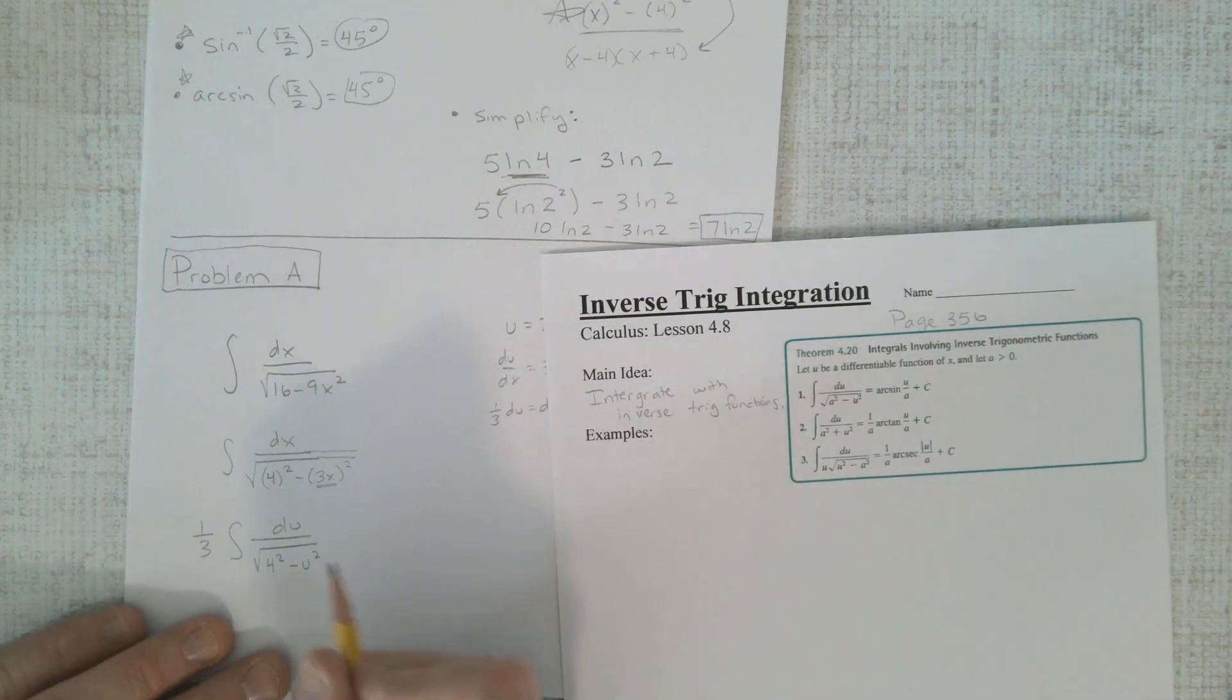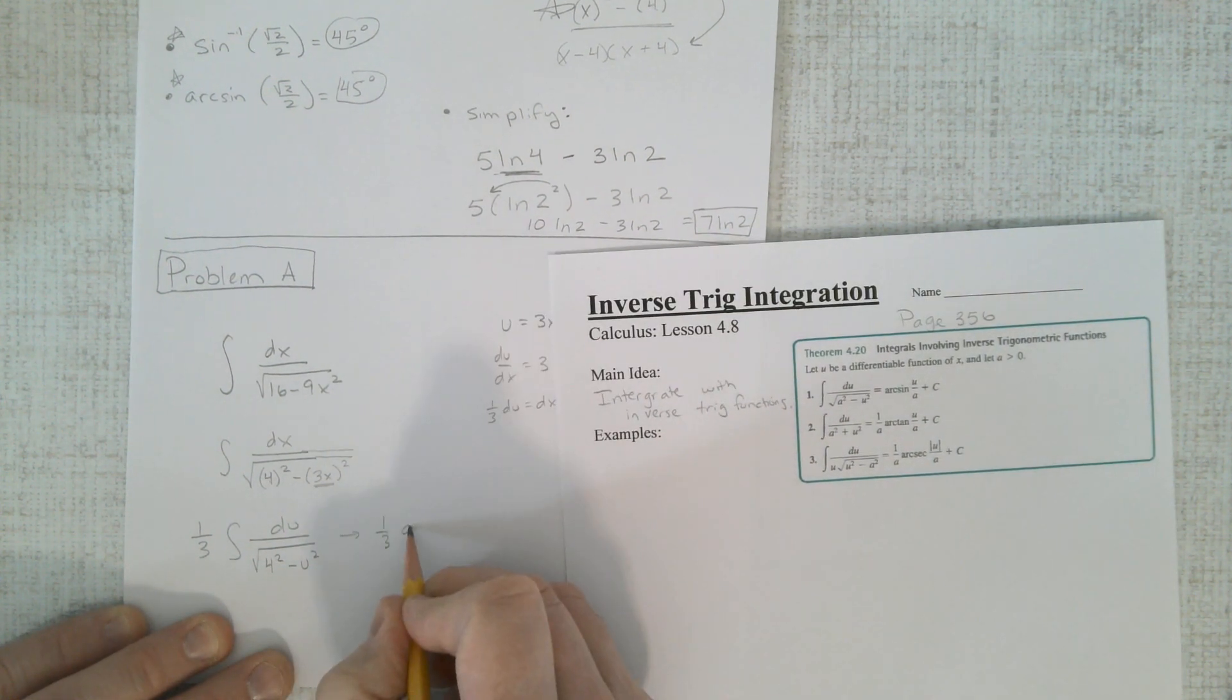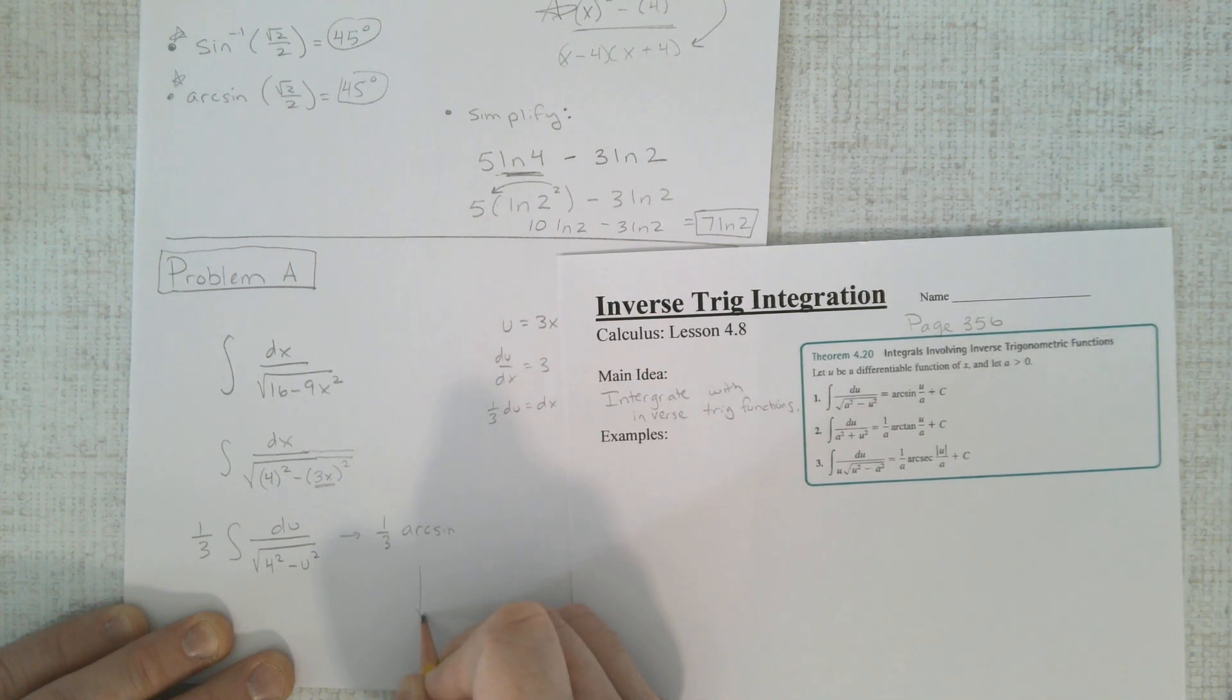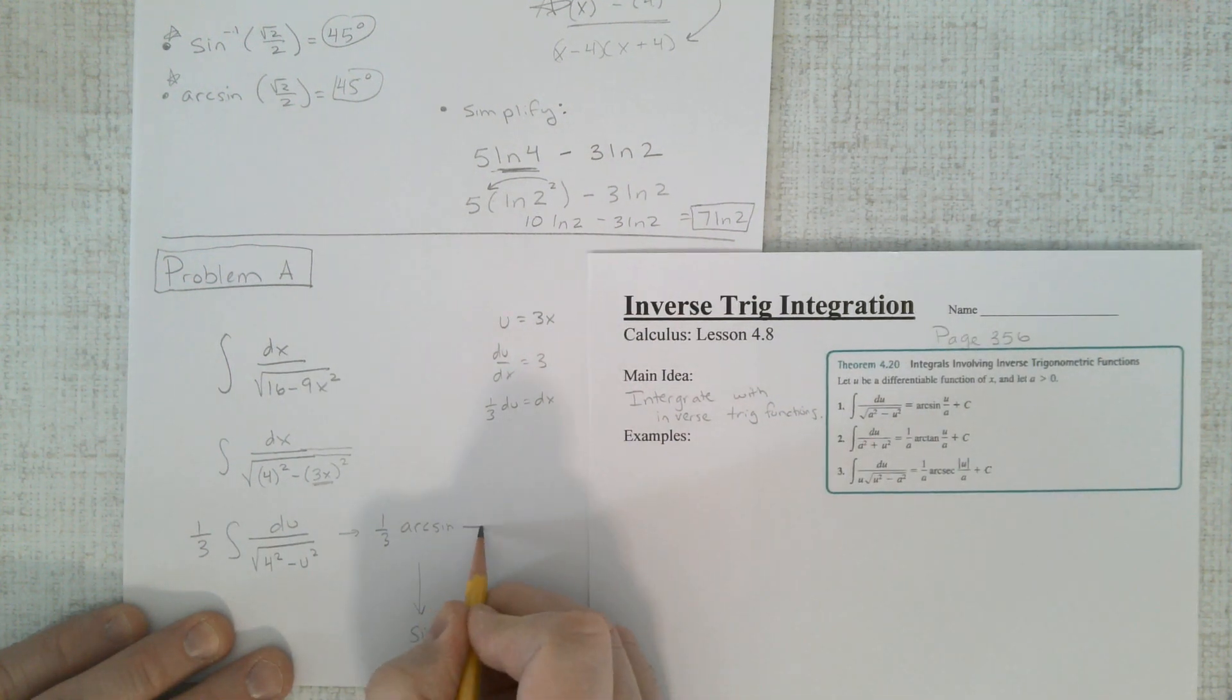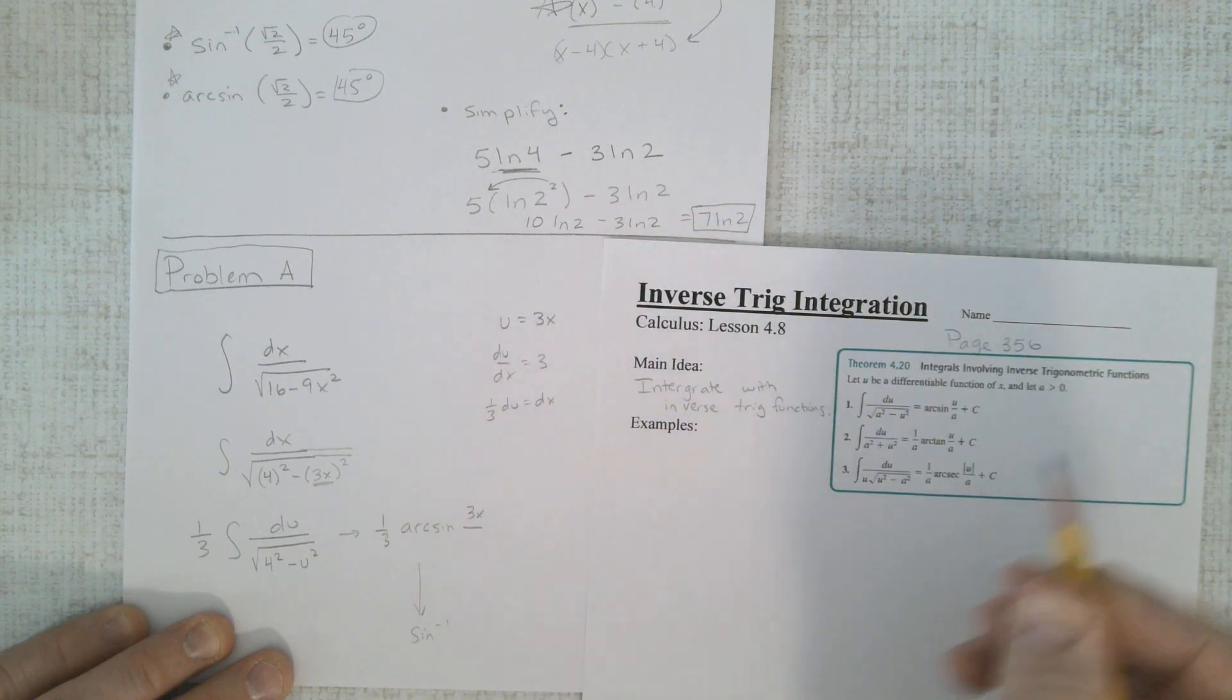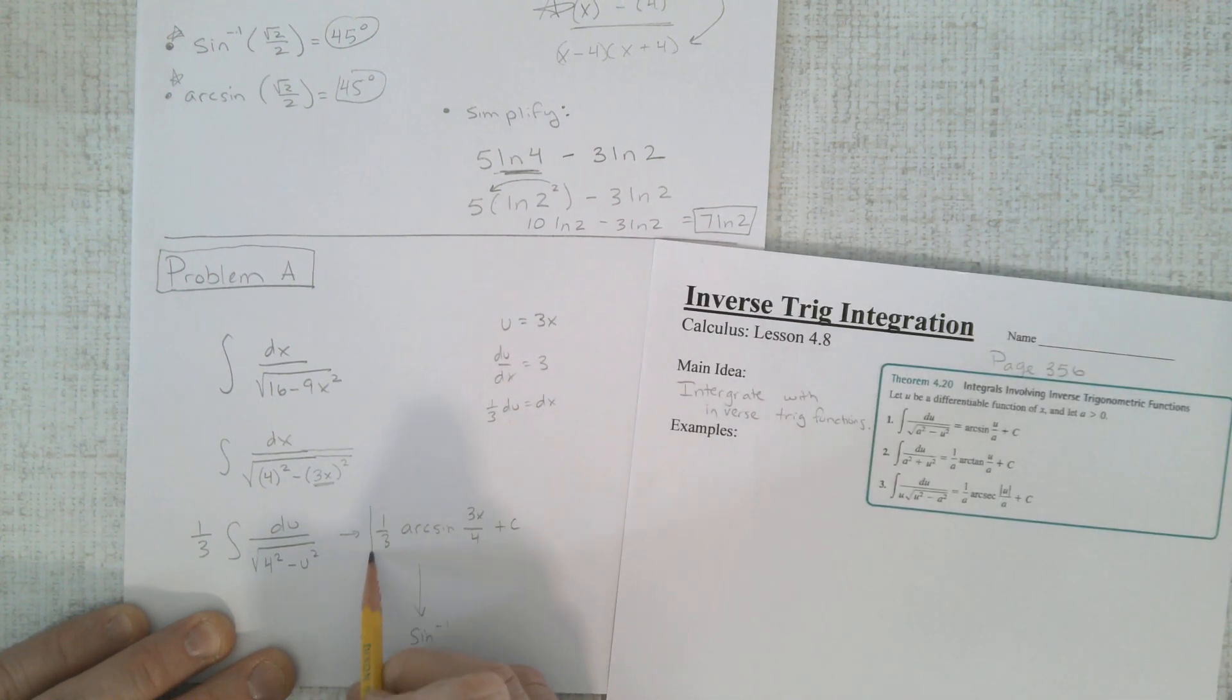So now we can go right into the answer of 1 third arc sign, arc sign. Again, your calculator just says inverse sign, same thing. And u on the top, and u is 3x. a on the bottom, a is 4. And don't forget to put plus c.